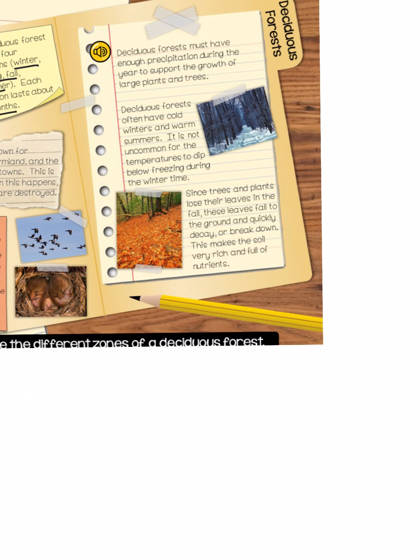Deciduous forests must have enough precipitation during the year to support the growth of large plants and trees. One thing you can do above and beyond what's required is compare and contrast the different biomes that we're reading about. Here we're learning that in contrast to a desert biome, deciduous forests receive quite a bit of rain, and that enables large plants and trees to grow.